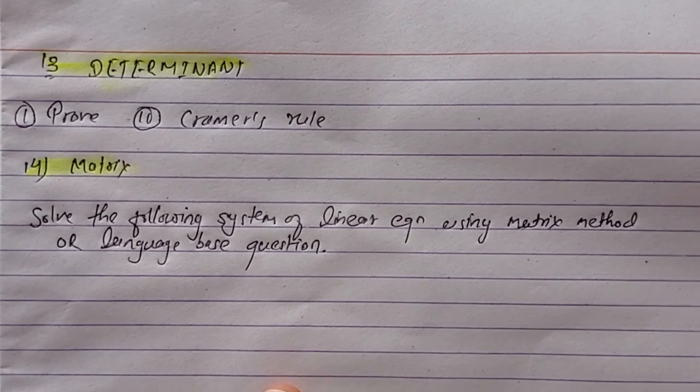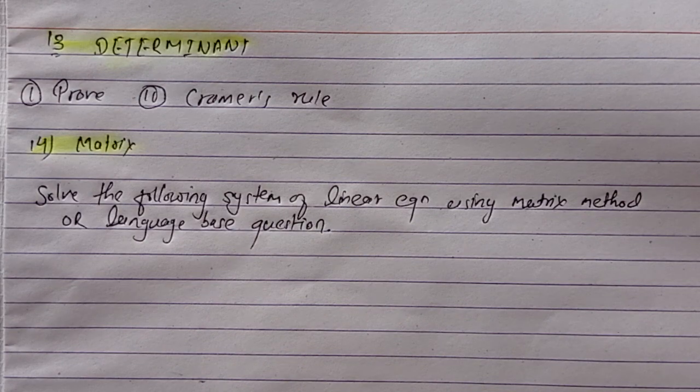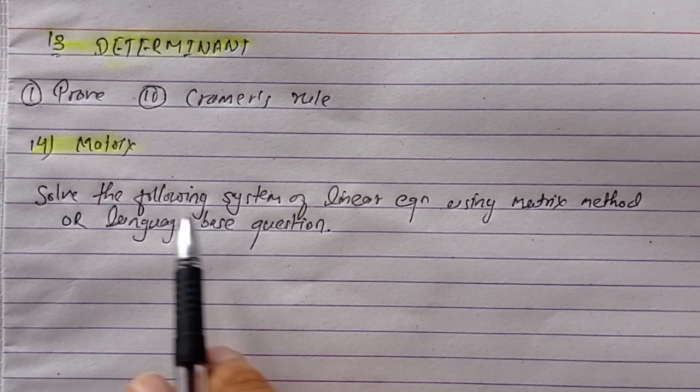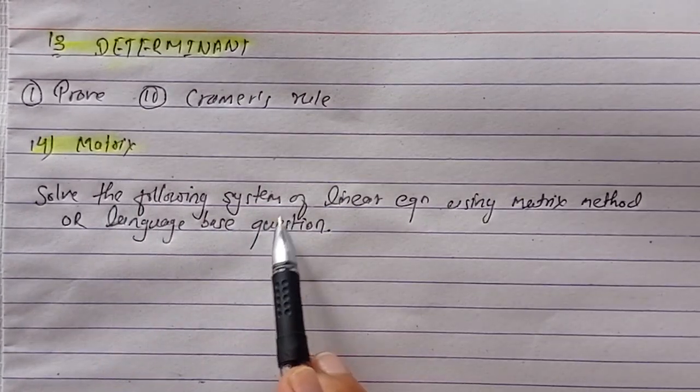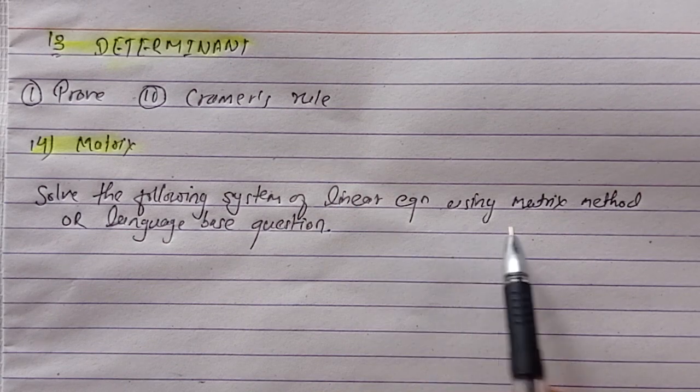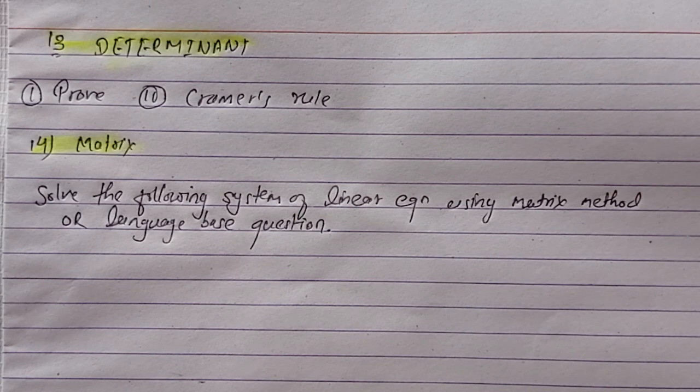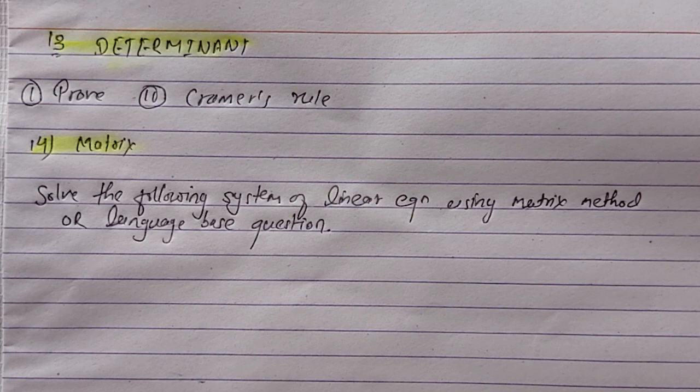Last chapter is matrix. This will be explained for 10 marks. Solve the following system of linear equations using matrix method. Let's talk about one question. This method is called matrix method. So it will explain how to use matrix method. It will be a language-based question that will come for 10 marks.